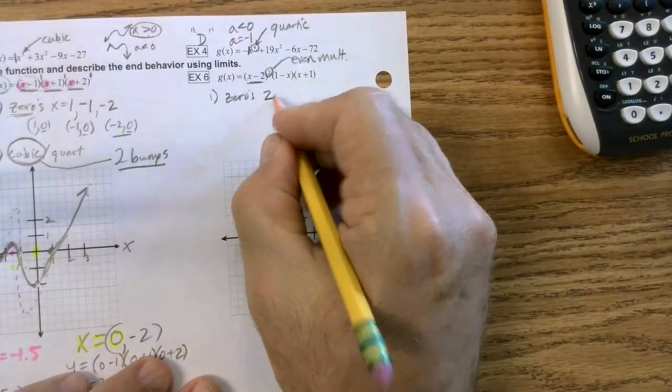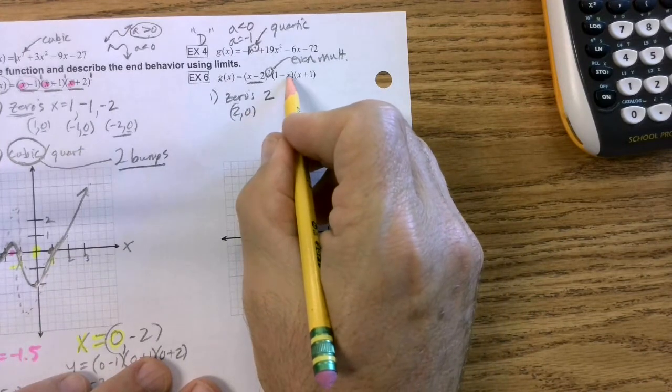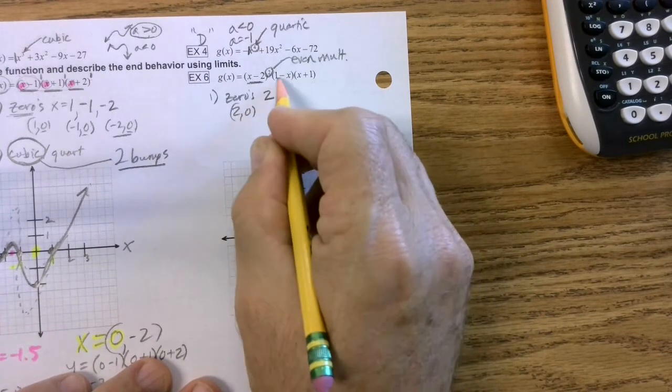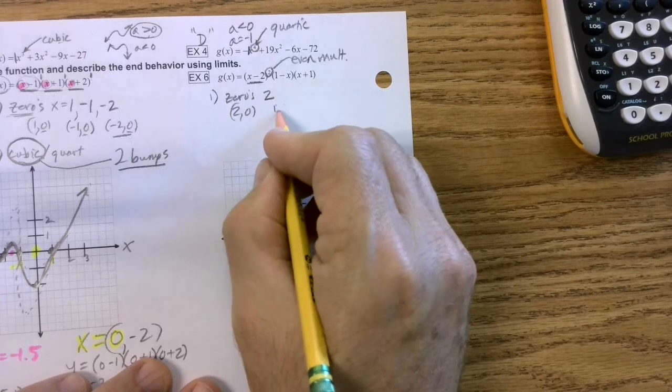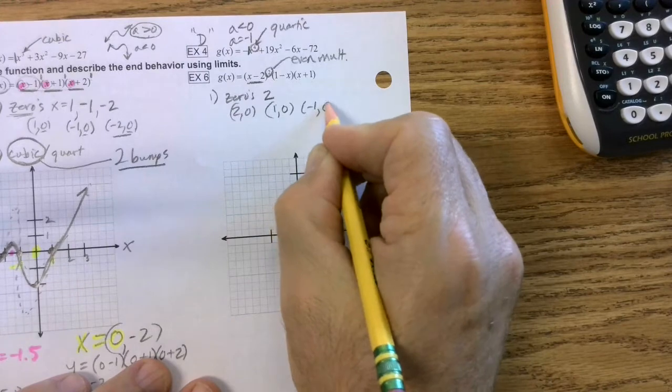But now we're going to say, all right, two. So two comma zero. And then we've got, that's actually going to be a one, because one minus one is zero. And then this would be a negative one, so negative one, zero.